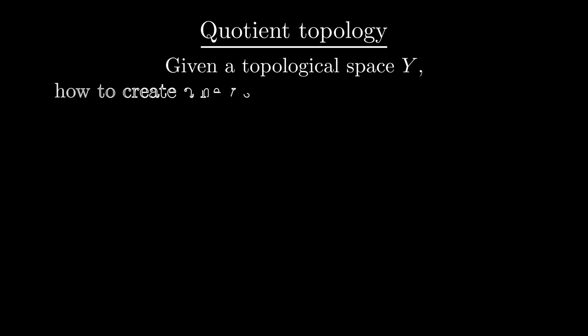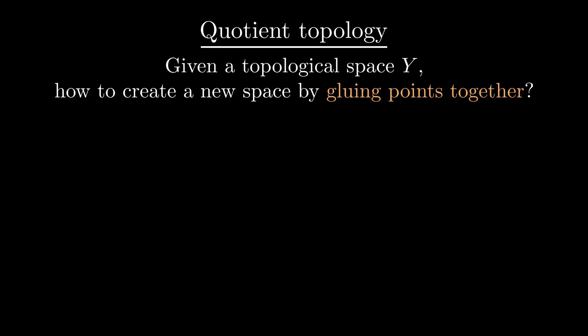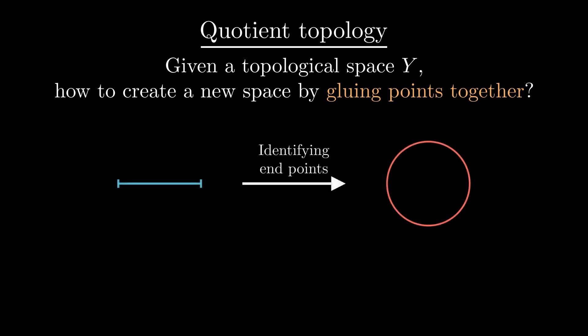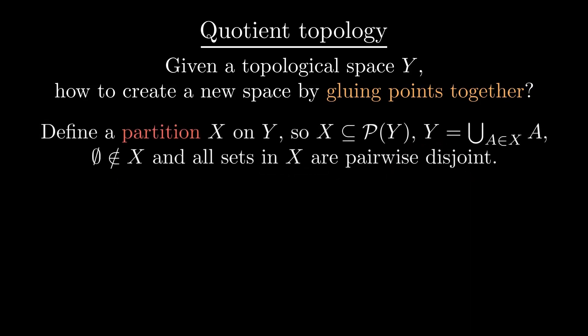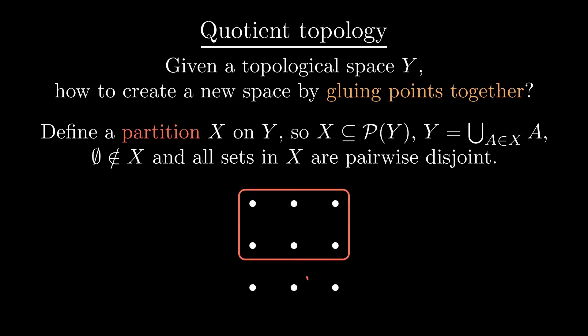Another example is the quotient topology. We are given a topological space y and want to create a new space by gluing points in y together. For example, given an interval, by identifying the endpoints, we should obtain a circle. Formally, we need a partition x on y — a collection of subsets which cover y and don't overlap. Then all points in the same subset in the partition are glued together. So for this nine-element space, the resulting space would have three points, corresponding to each subset.